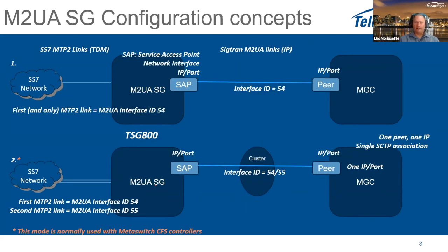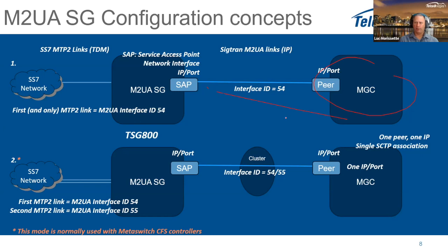For a typical signaling gateway and media gateway function for an MGC, all links are integrated into one cluster — configuration mode number two. The MGC needs to understand that interface ID 54 is the first link, 55 the second, and so on, forming MTP3 link sets with their respective point codes. The signaling gateway can serve multiple media gateway controllers and can also support other SIGTRAN variants.